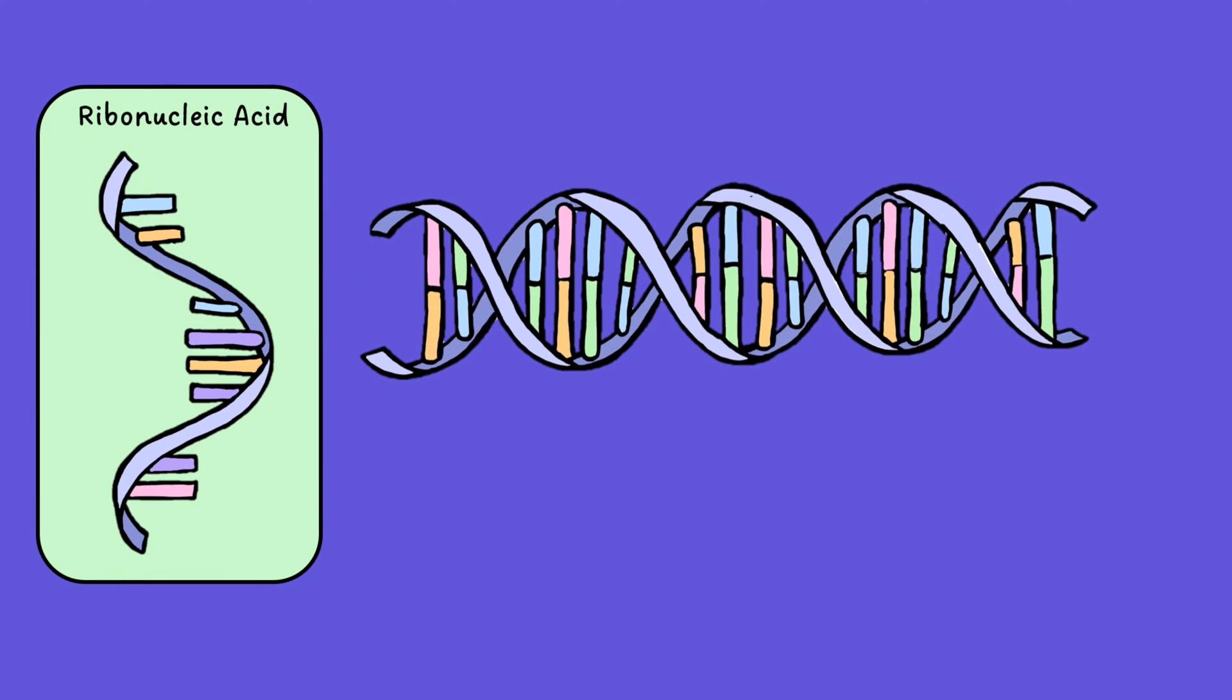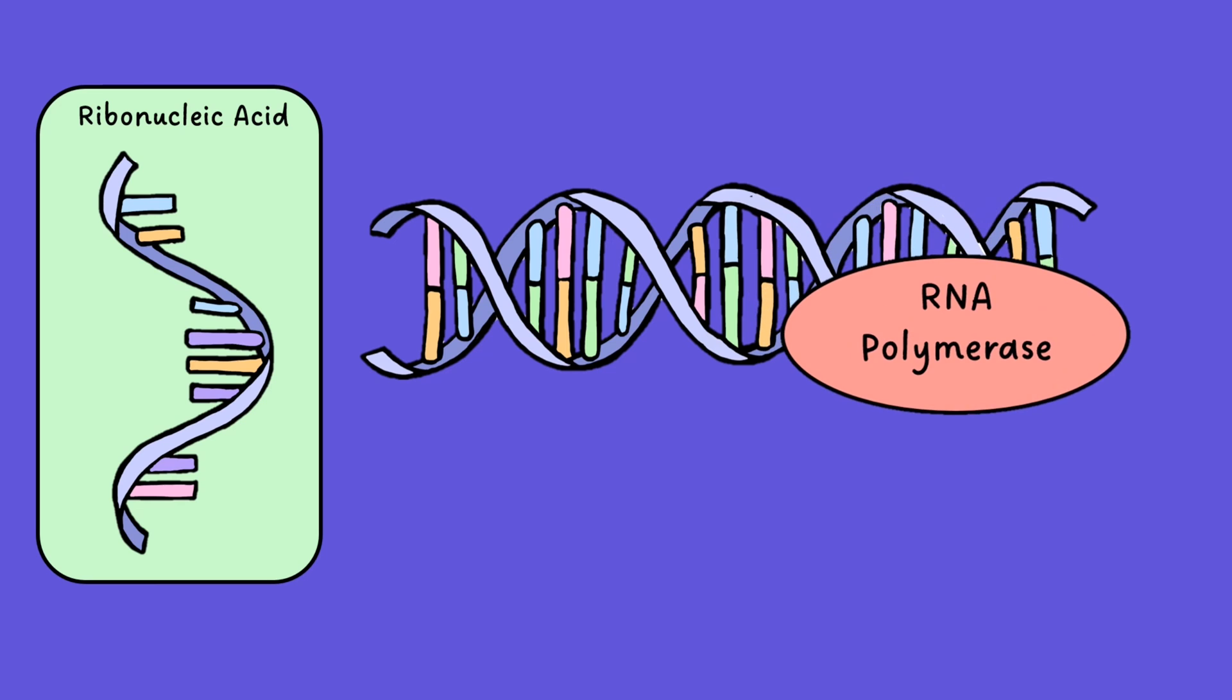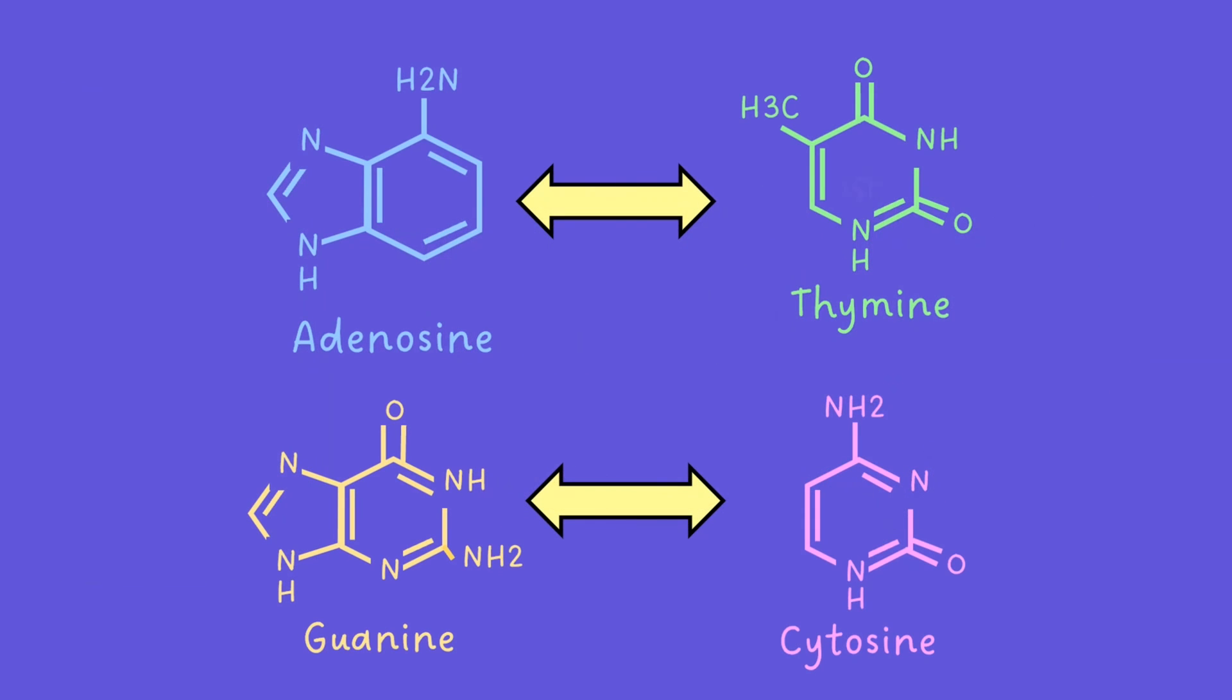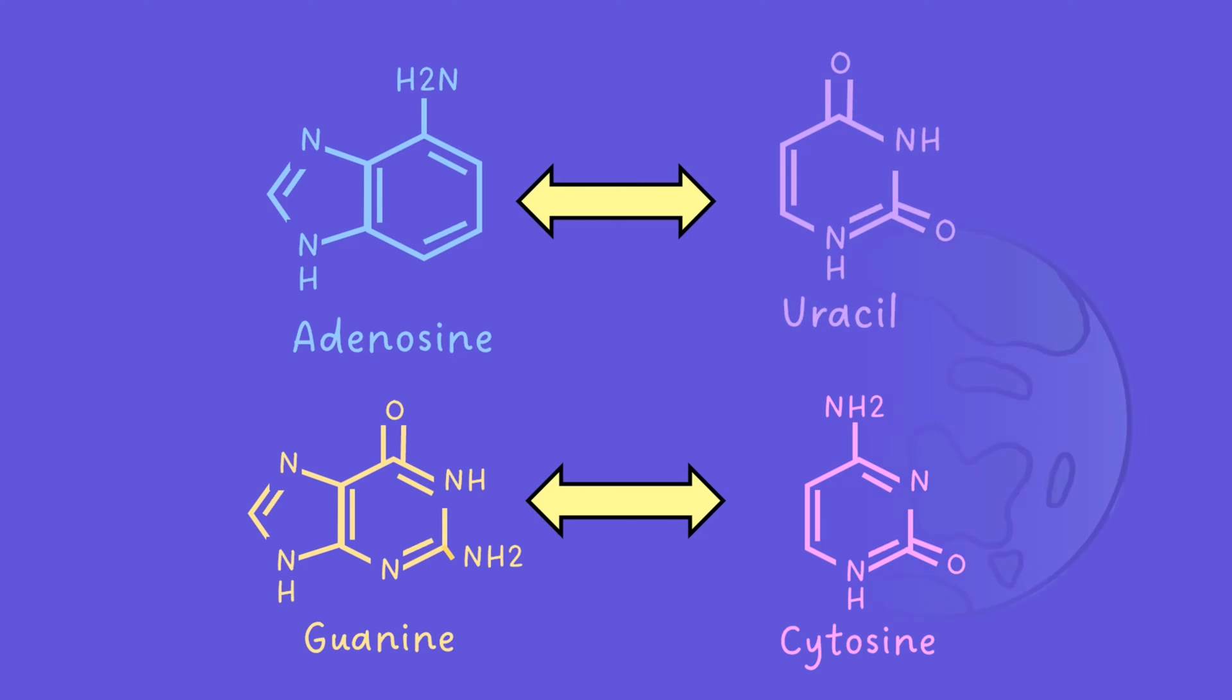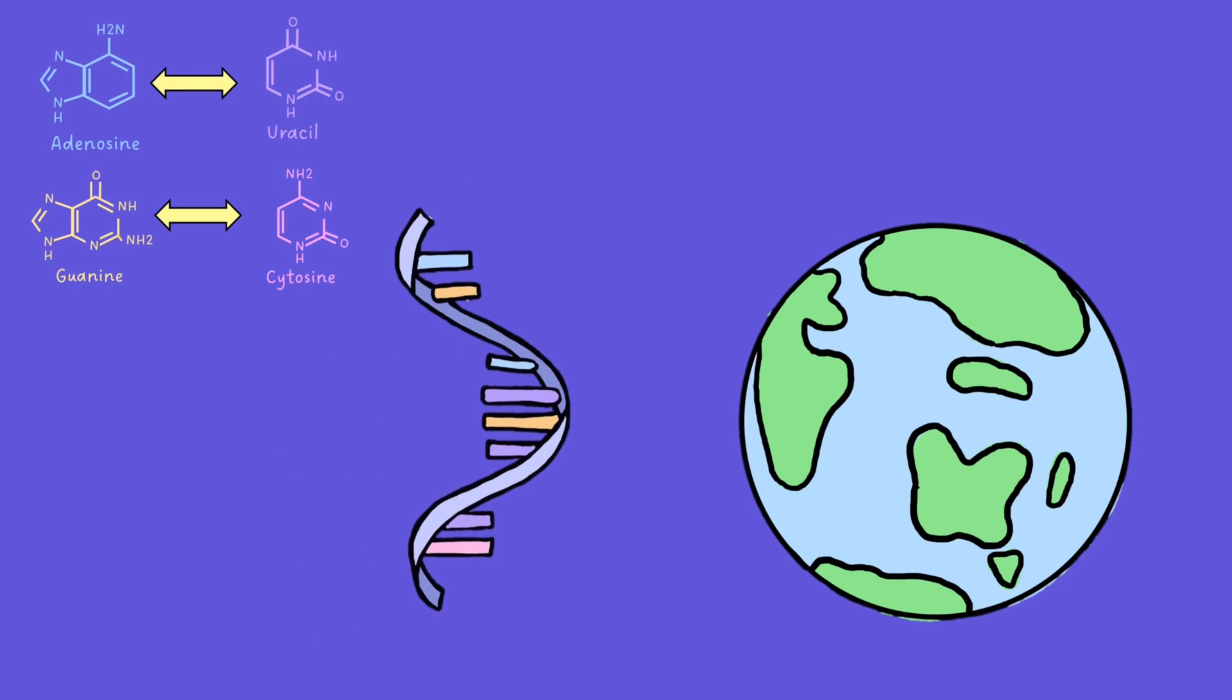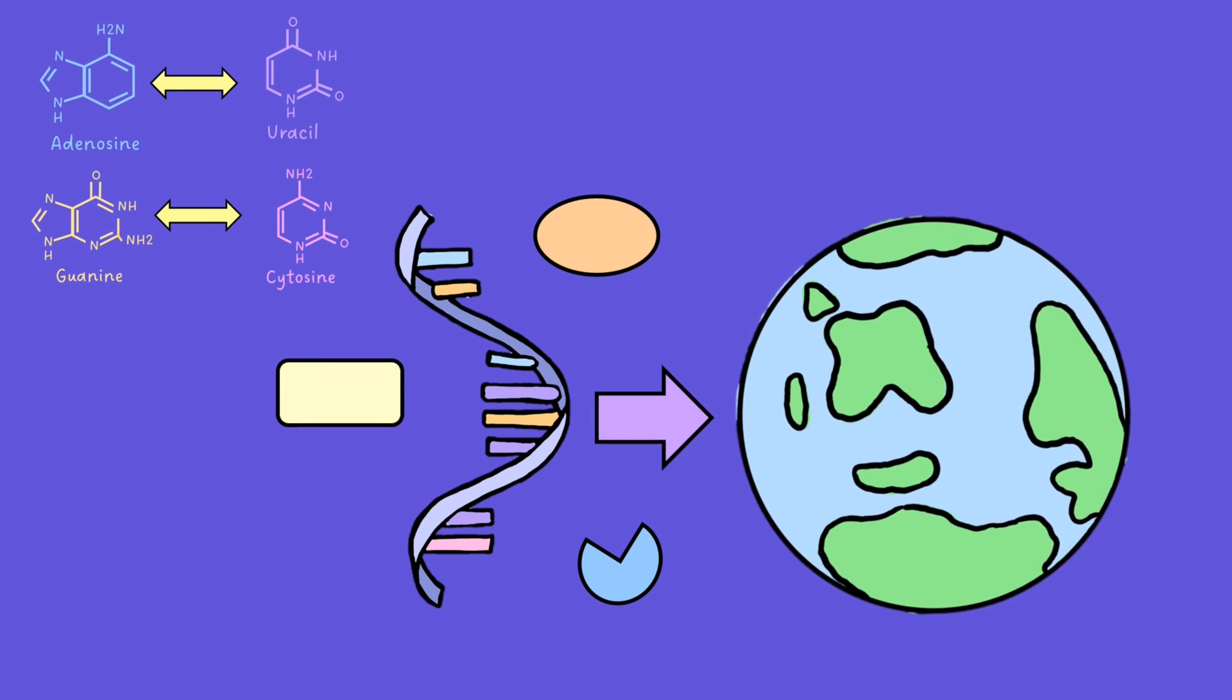Ribonucleic acid, or RNA, is synthesized from DNA through transcription, where an enzyme RNA polymerase reads the DNA code crafting mRNA using the nucleotide uracil instead of thymine. This mRNA carries genetic instructions from DNA to the ribosome, serving as a template for protein synthesis, a fundamental process in living organisms.